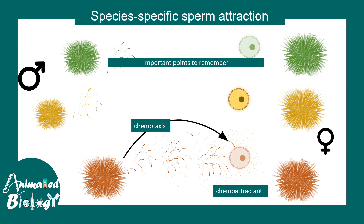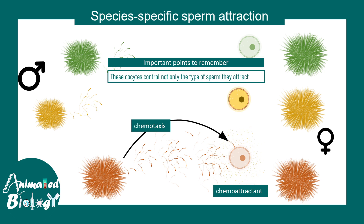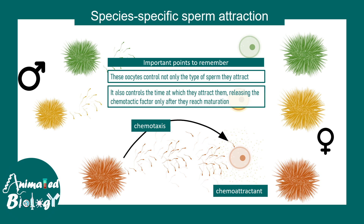Important points to remember: the sea urchin ovum can not only control the type of sperm it attracts, but it can also regulate the timing. The best time to attract sperm is when the ovum is mature. These are the factors regulated by the sea urchin ovum.